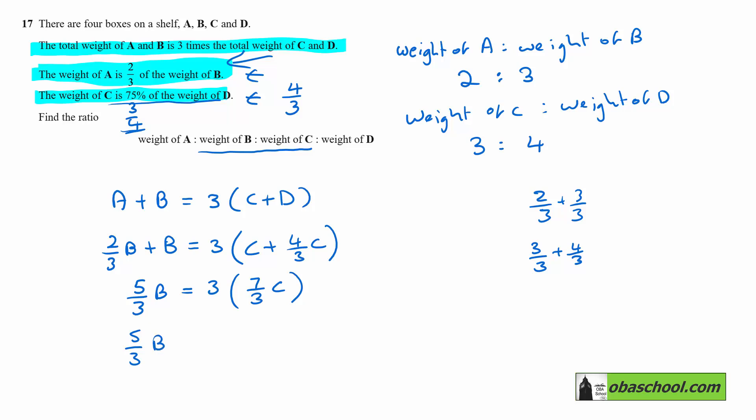So five-thirds of B would be three times seven-thirds is seven, is seven C's. Multiply both sides by three, and five B's is equal to 21 C's.